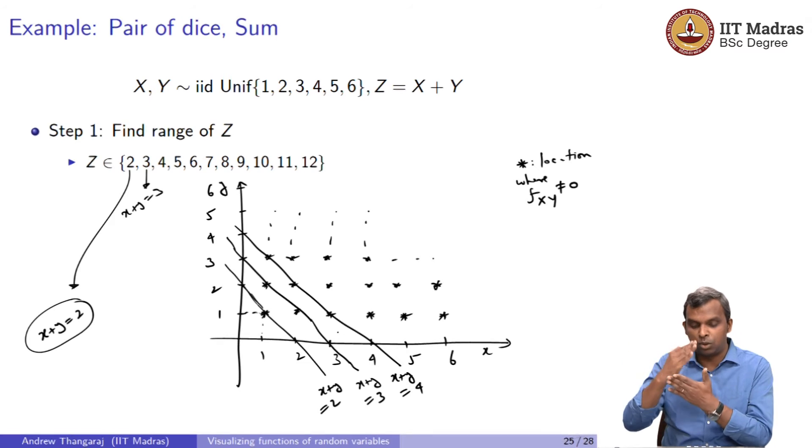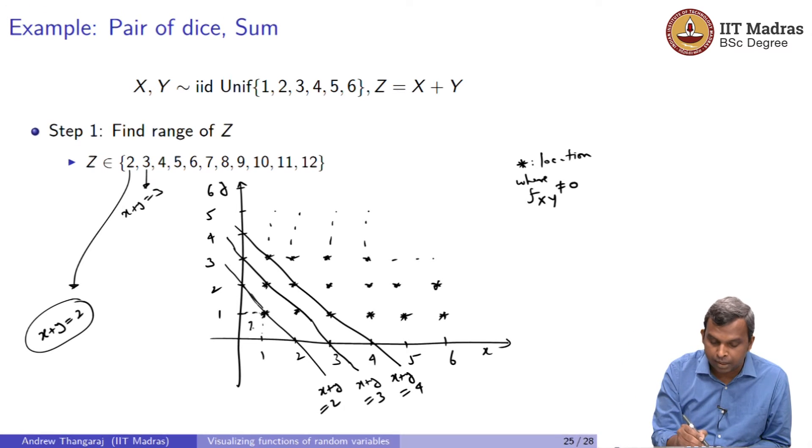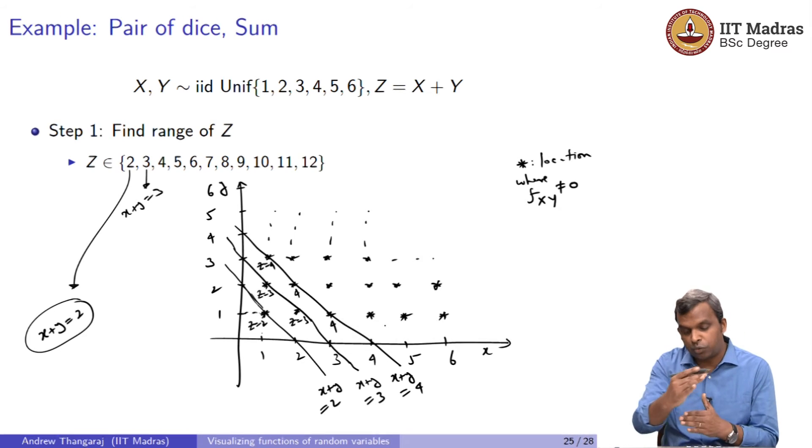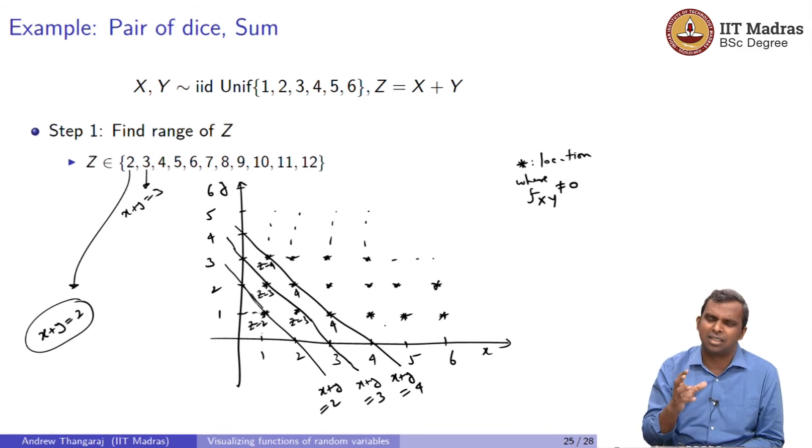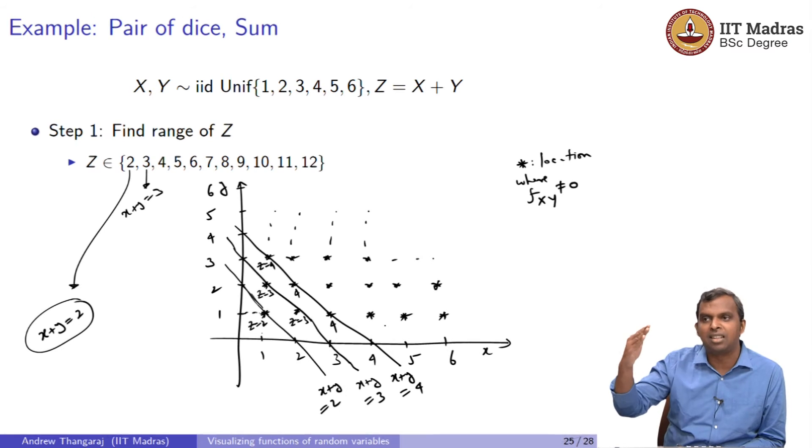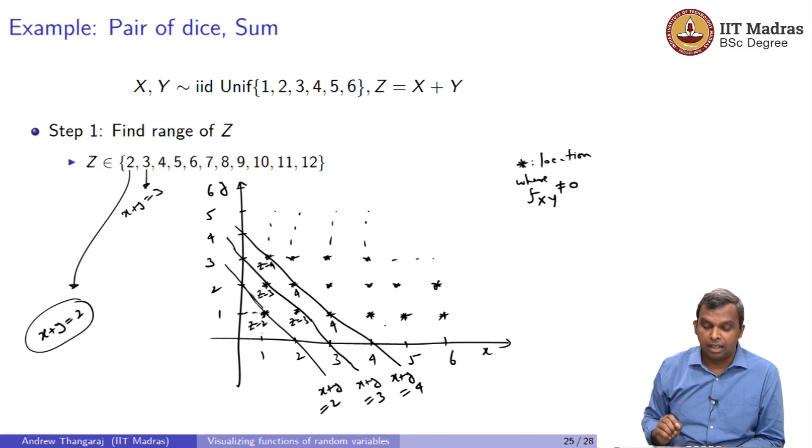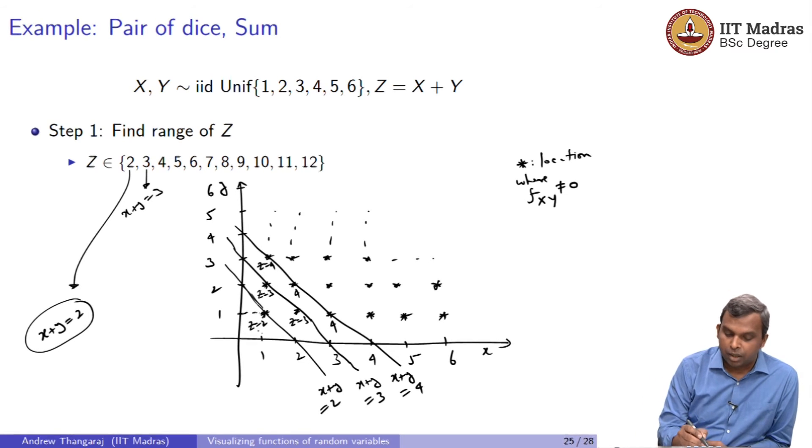Think of all these stars that are lined up in a grid and then look at the value of x plus y that each of them take. You will notice this pattern. There will be this value 2 that comes here with this point, z equals 2. Here you will have z equals 3. Here also you have z equals 3 and then you have z equals 4, z equals 4, z equals 4. The number of points that result in z equals 2 is 1, the number of points that result in z equals 3 is 2, the number of points that result in z equals 4 is 3.